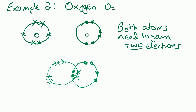How do we show that with sticks? Well we've got an oxygen atom joining with another oxygen atom, but we've got 2 pairs of electrons - a pair there and a pair of electrons there. And this is what we call a double covalent bond, because we're sharing 2 pairs of electrons between the 2 atoms.